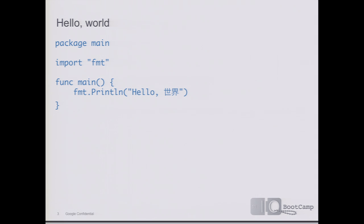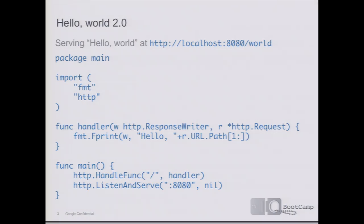You can use Unicode in string literals and also in identifiers — so if you're writing a mathematical formula, you can use a sigma character to signify a value. This is hello world 2.0: if you run this program, it starts a web server listening on port 8080, and if you visit that URL you would see the string hello world. We've added the HTTP package to the imports and defined a handler function that writes hello followed by the path component of the URL as the HTTP response. In the main function, we register that handler to the web root and start the web server — an idea of the succinctness of Go code.